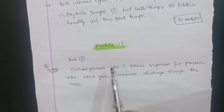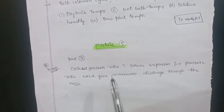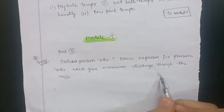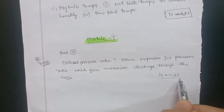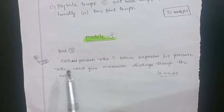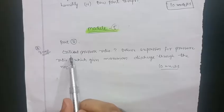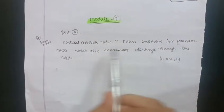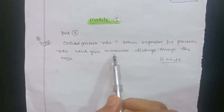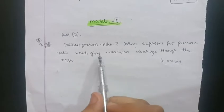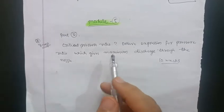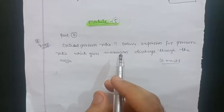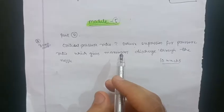In Module 5, there is one definite question: what is the critical pressure ratio? Derive the expression for the pressure ratio which gives maximum discharge through the nozzle. Covering just this one question will get you 10 marks in this module.